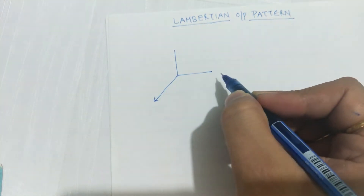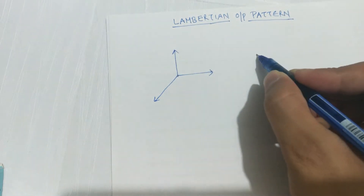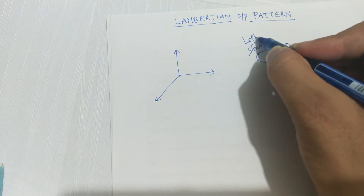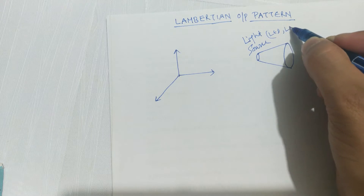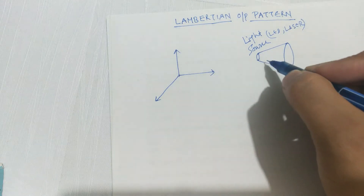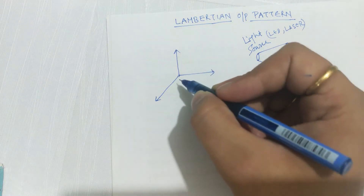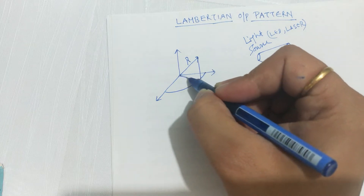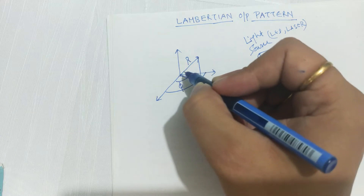Hello friends, in this video we'll talk about the Lambertian output pattern or Lambertian angle. To understand the Lambertian pattern, we first need to understand spherical coordinates. For any light source, suppose this is a light source and light is emitting like a cone from this light source — it may be an LED or laser. Suppose light is emitting like this.